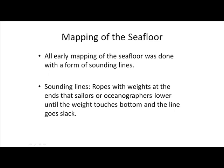All early mapping of the seafloor was done with a form of sounding lines. Sounding lines are ropes with weights at the end that sailors or oceanographers lower until the weight touches the bottom and the line goes slack. These ropes have specific lengths, and using those known lengths, scientists are able to record the depths of the seafloor. After recording the depth, they retract the rope, move forward to the next point, and repeat the process to record the next data point.